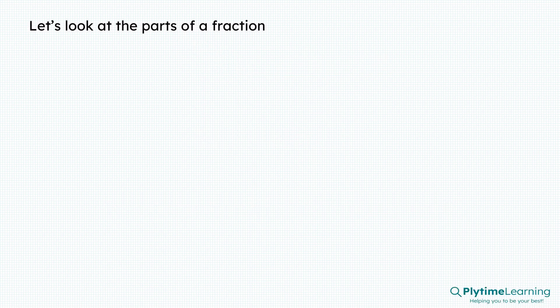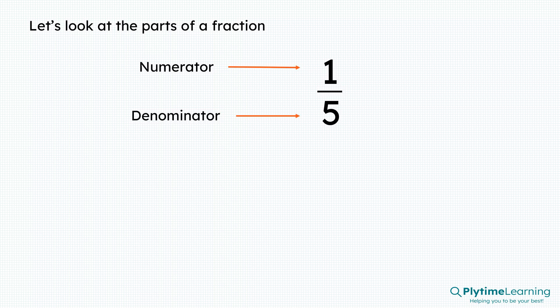Let's look at parts of a fraction. Here we have a fraction. The top number, the one, is the numerator. The bottom number, here the five, is the denominator.